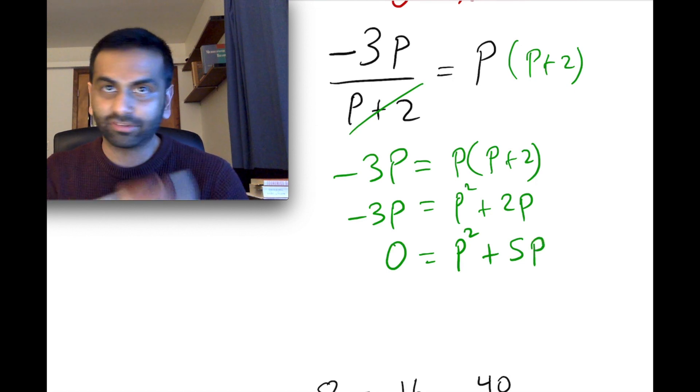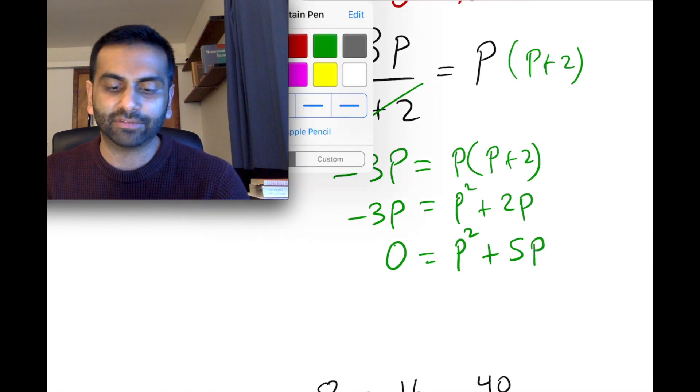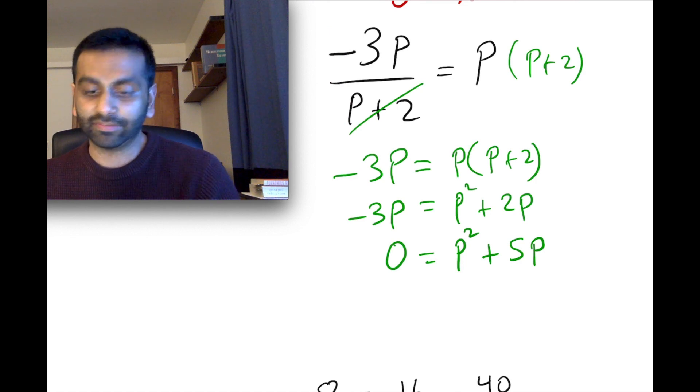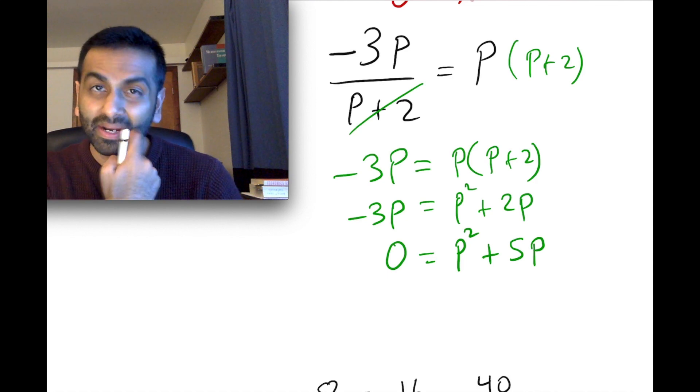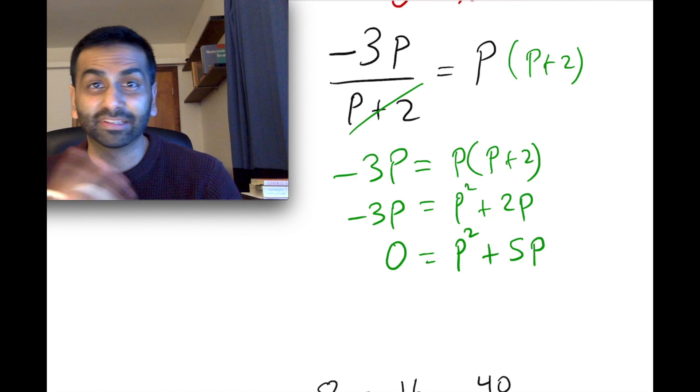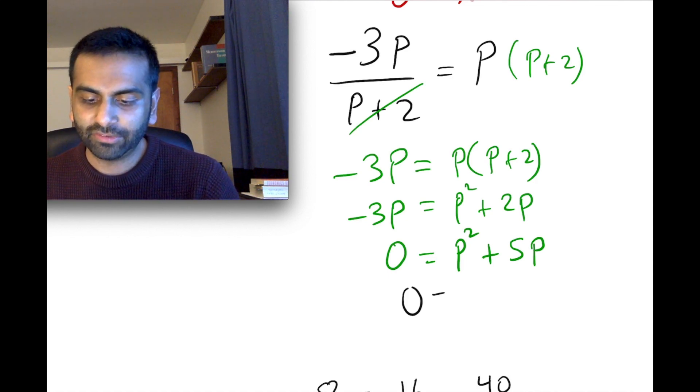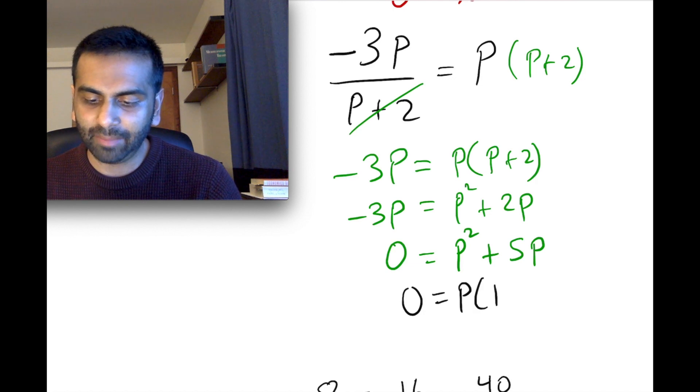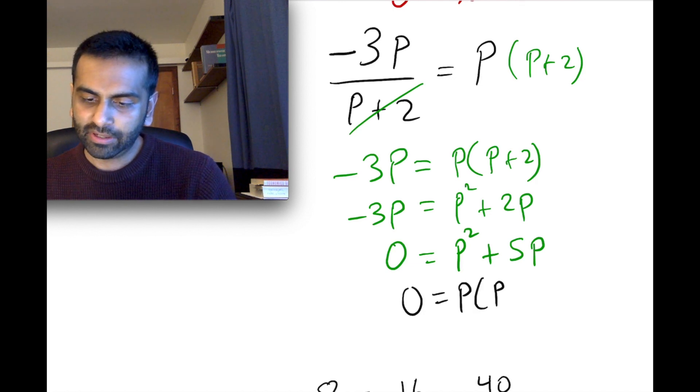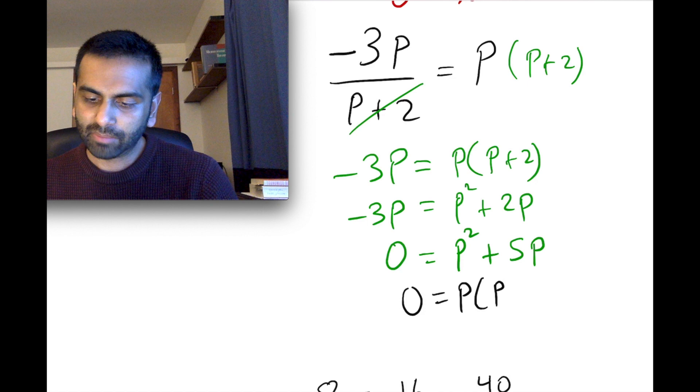So we get p squared plus, and we have 2p plus another 3p, which would give us 5p. Now to solve for this, you could certainly use a quadratic formula. That would get you an answer. But alternatively, you can factor. It might look like you can't factor because there's not that constant term. But it actually is easier to factor this way because you can literally just factor out a p. So you get 0 equals p times, and then what are you left with? You're left with p plus 5.